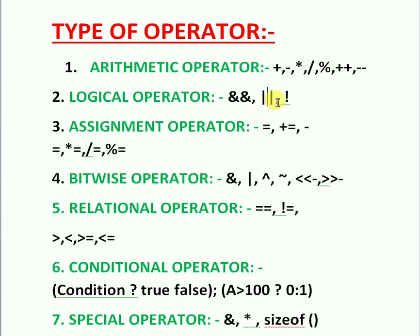OR (||) means this operator is used to check if at least one of the operands is true. Suppose there are three operands — at least one will be true. NOT (!) is used to check if the operand is false.